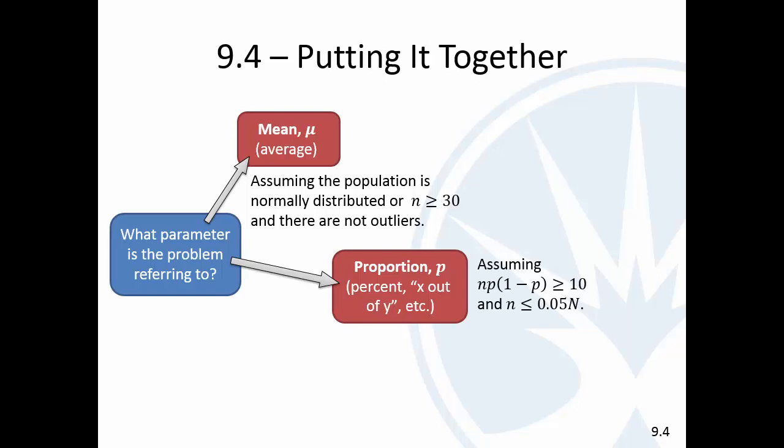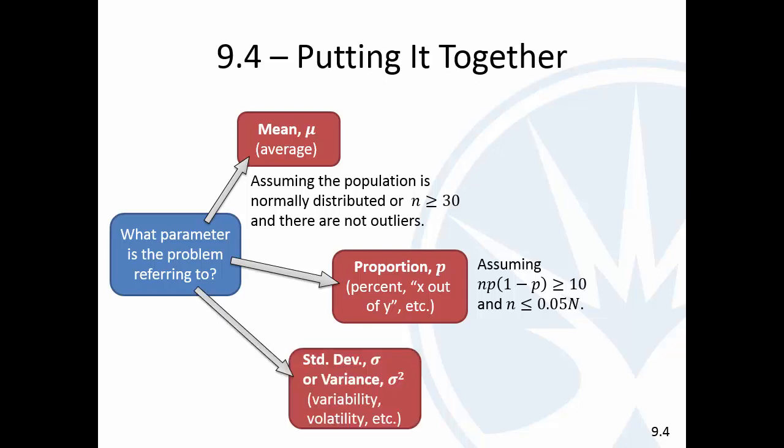For a proportion, the conditions are that N times P times (1 minus P) has to be at least 10, and the sample has to be less than or equal to 5% of the population. Or we could have a standard deviation or a variance — that can be called variability, volatility, spread, or something talking about how much they vary. There, the population must be normally distributed.